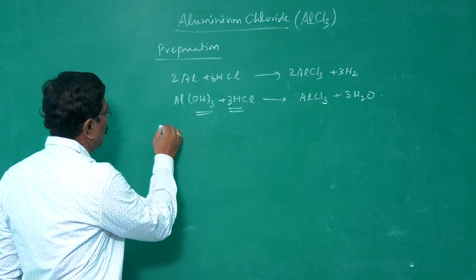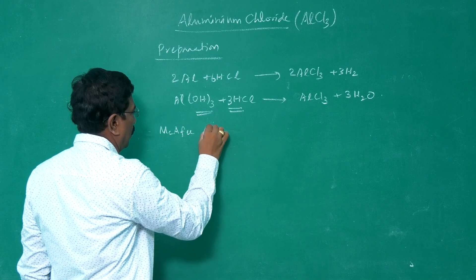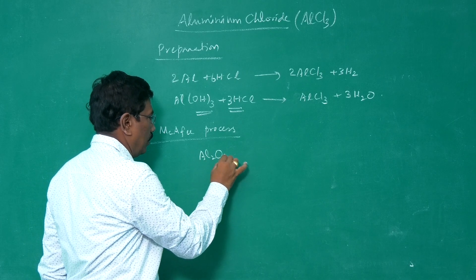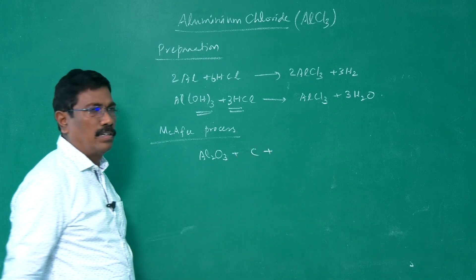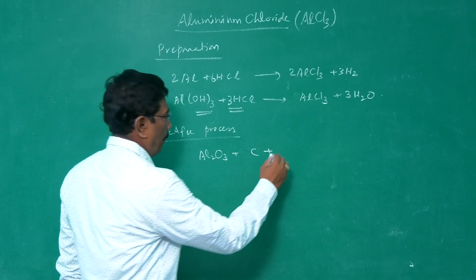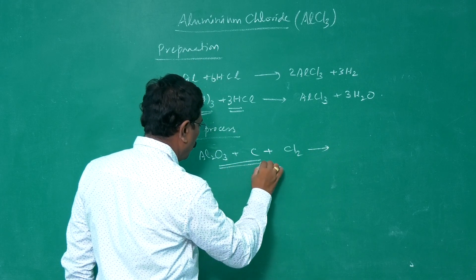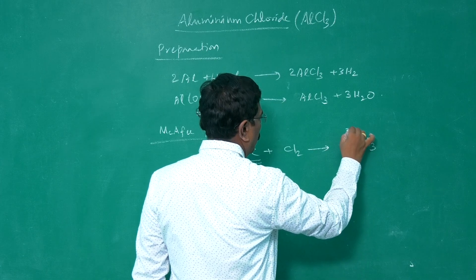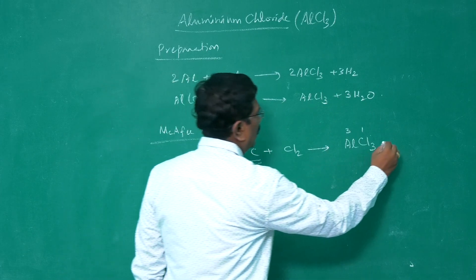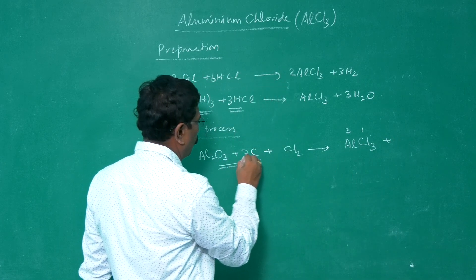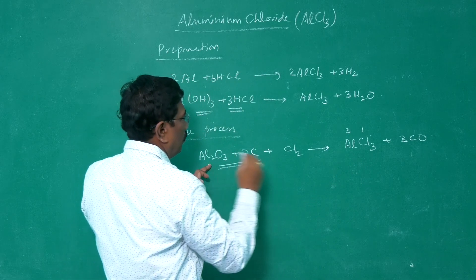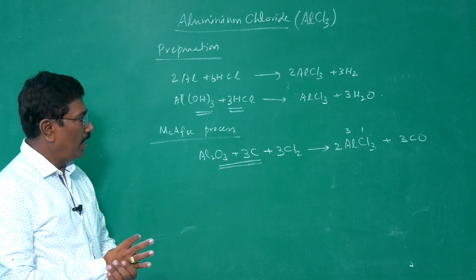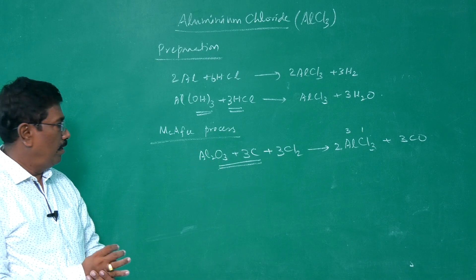It can also be prepared by the McAfee process. In the McAfee process, a mixture of alumina and coke is taken, and chlorine gas is passed through it. Carbon combines with oxygen to form carbon monoxide, and aluminium chloride is produced: Al₂O₃ + 3C + 3Cl₂ → 2AlCl₃ + 3CO.